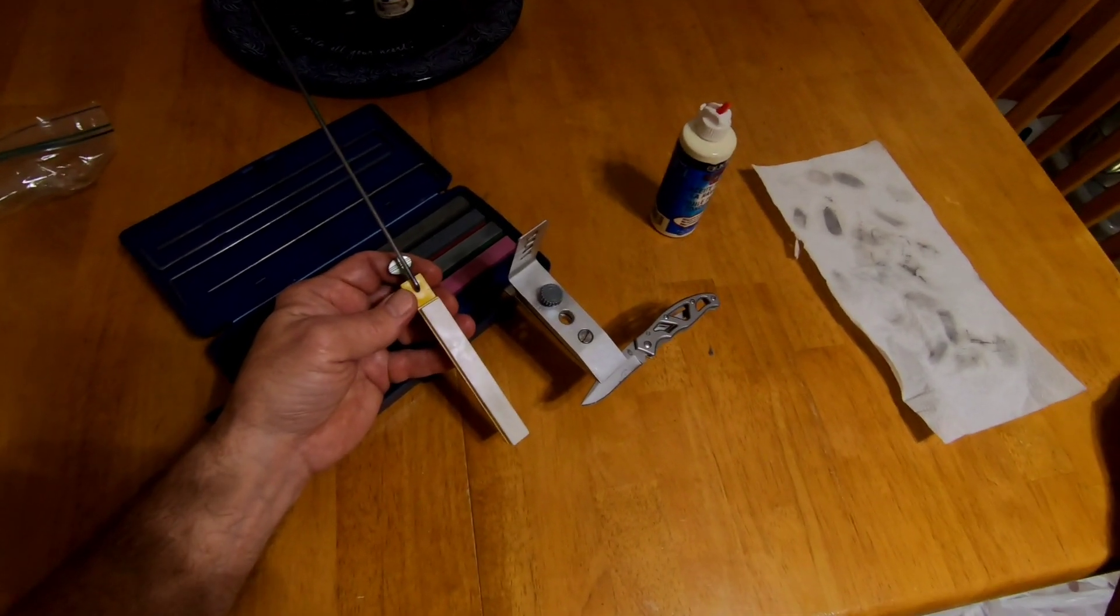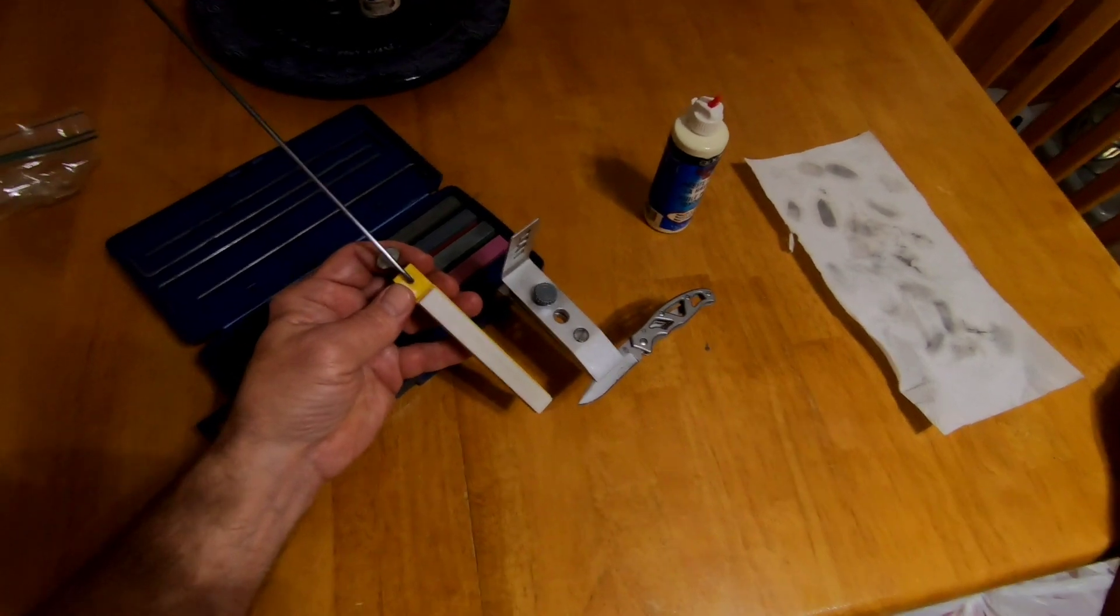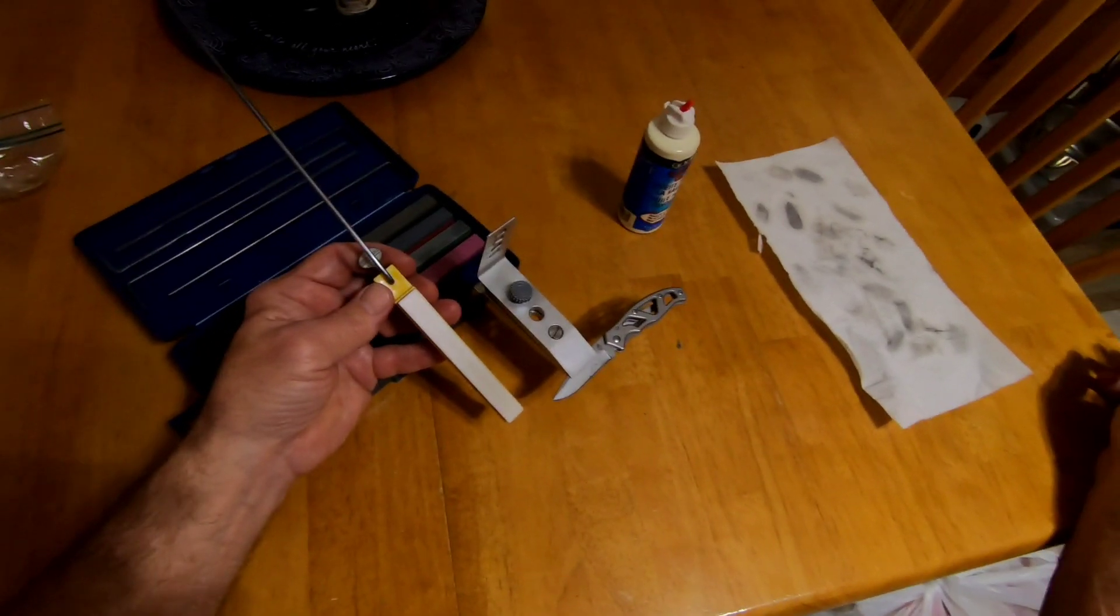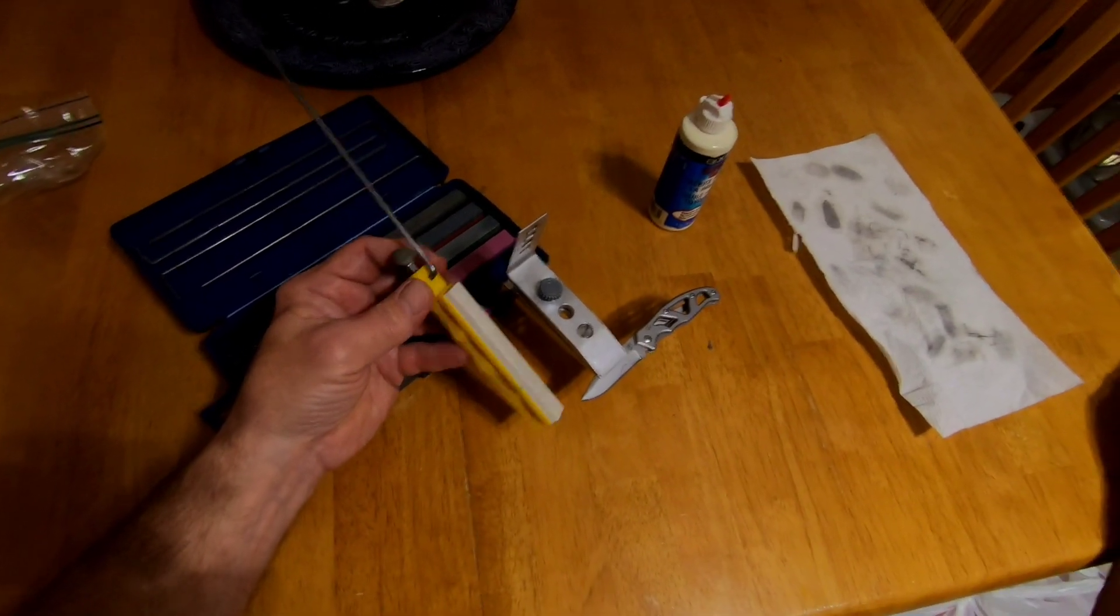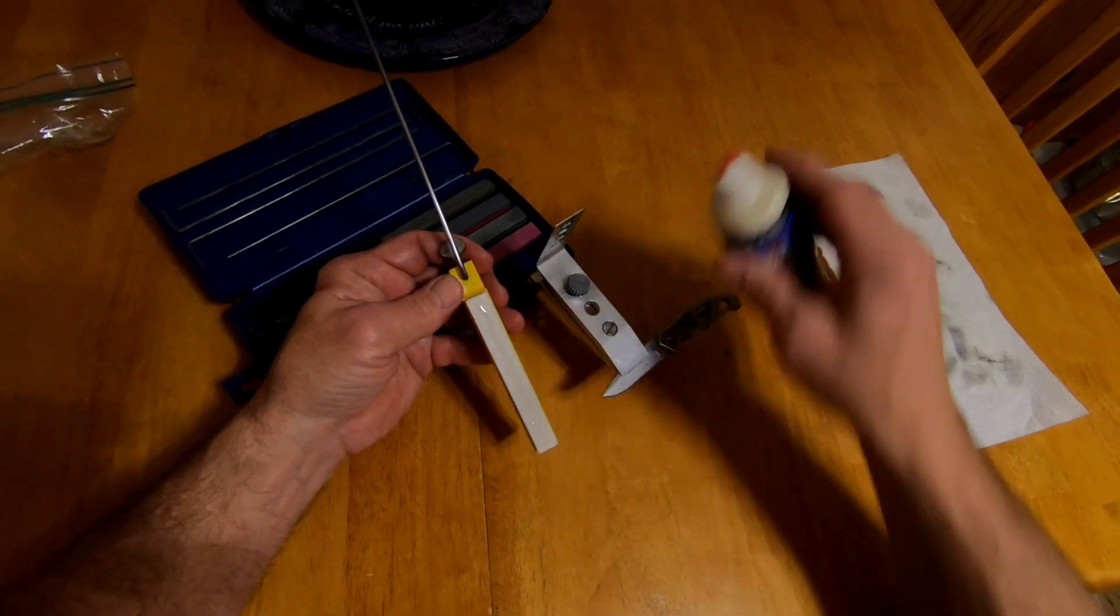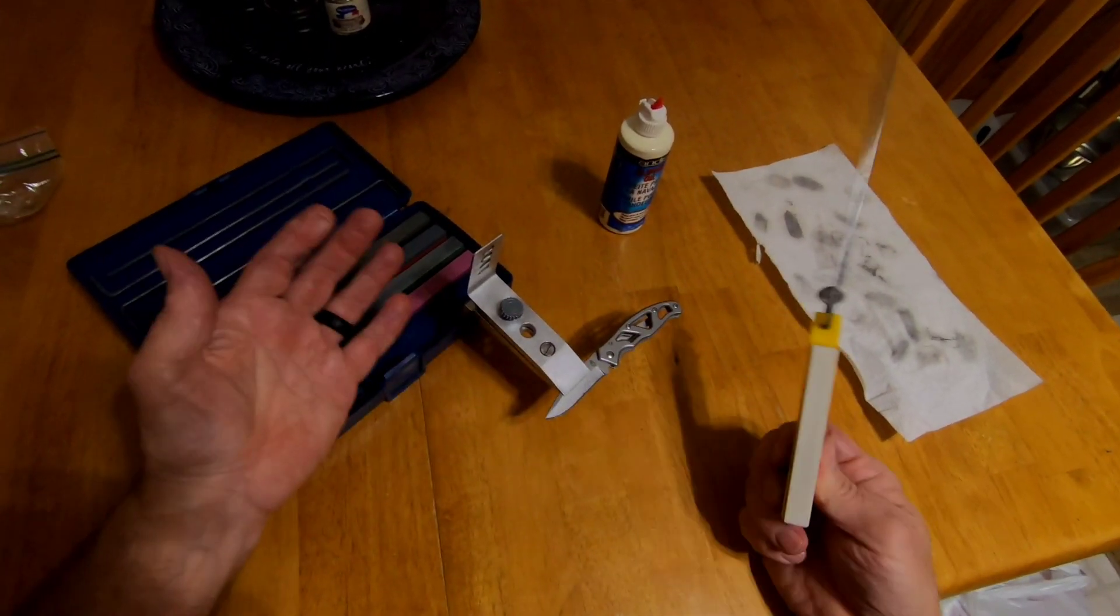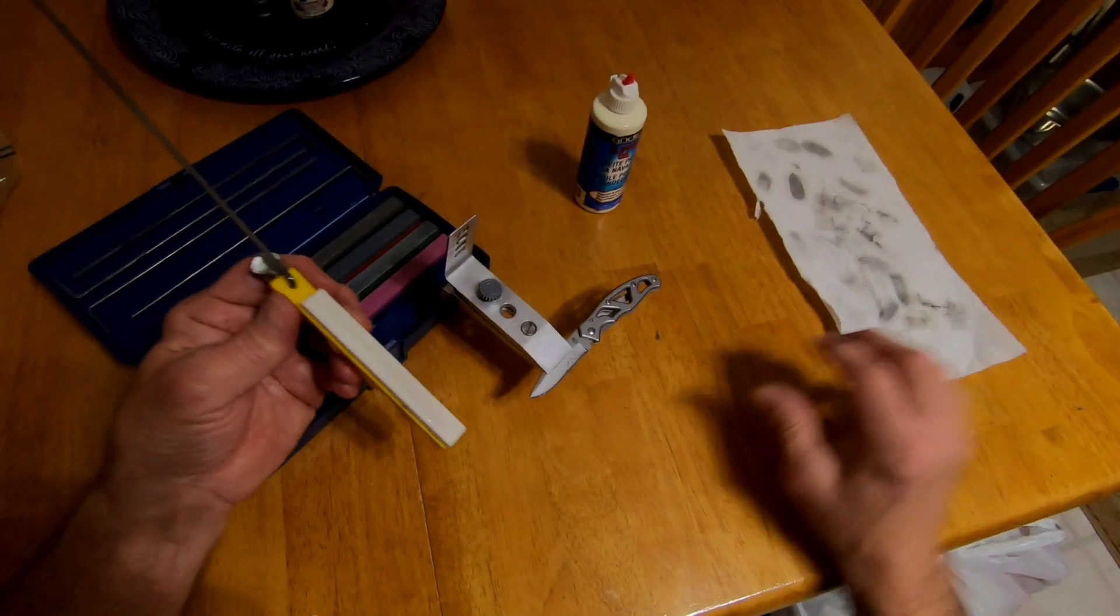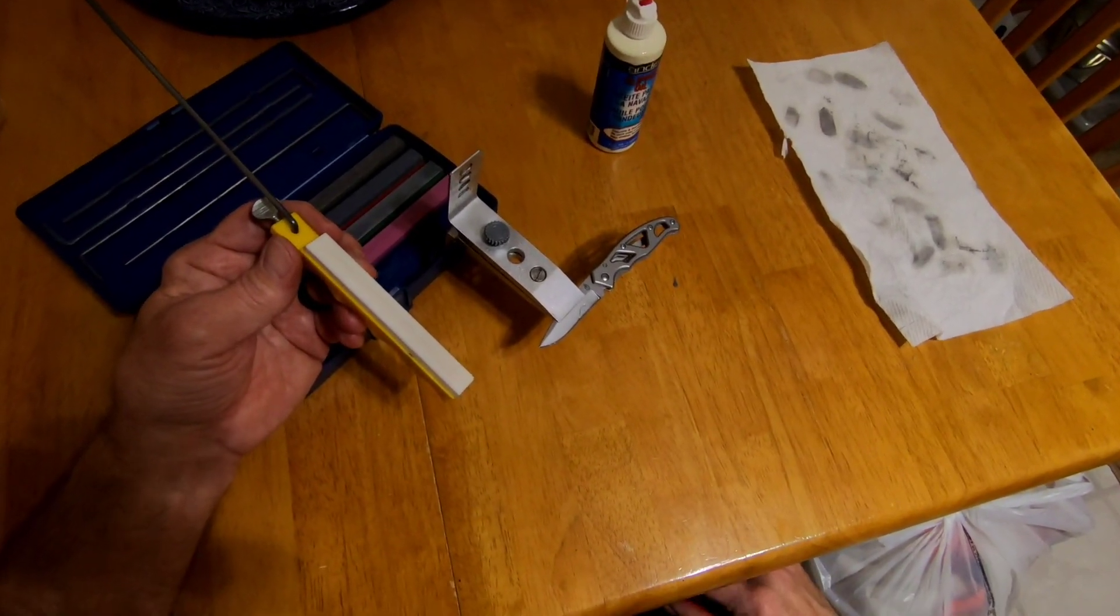Okay, this is the last stone. This is the ultra-fine stone. This is like a hard Arkansas stone, if not a little harder. This is an ultra-fine. So, here we go again. Same thing. Make sure you got oil on your stone. Same amount of strokes on both sides, and when you're done, you got to have a pretty nice edge.